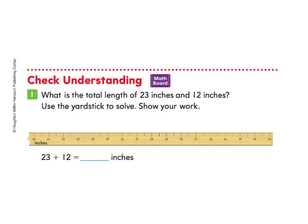Great work. Let's take a look at Check Understanding. What is the total length of 23 inches and 12 inches? Use the yardstick to solve. Show your work. At this time you can pause if you'd like to try this on your own and come back to check your answer, or you can follow along with me. So I'm going to start here at 23. So I find the number 23 on the yardstick. I put a little dot right on top of it.